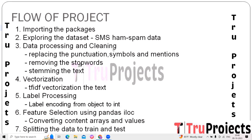Data processing and cleaning are crucial for preparing text data for analysis and modeling. This involves: first, replacing punctuation symbols and mentions by stripping unnecessary characters; second, removing stop words that do not contribute significant meaning; third, stemming the text by reducing words to their root or base form; and fourth, vectorization — converting text data into a numerical format using techniques like TF-IDF (Term Frequency-Inverse Document Frequency).